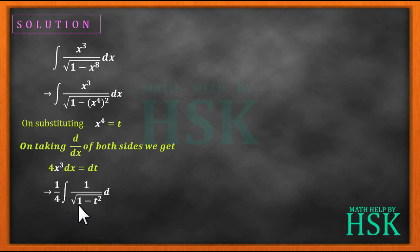And for x to the power of 4 I'm going to write t, so I'm going to get this as equal to 1 by 4 times integration of 1 upon square root of 1 minus t squared dt.